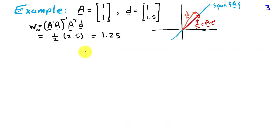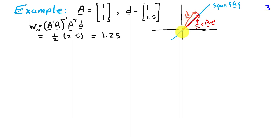We're going to start with an example where p, the number of parameters in w, is 1. So we have a matrix A containing a single column, and d is, for example, [1, 1.5]. If I look for the value of w that minimizes the error between Aw and d, I find that value w₀ is exactly 1.25. In this case we have a two-dimensional space because A has two rows, and the span of the columns of A lies along the 45-degree line. So Aw is always constrained to lie on this blue line, and d is out here at some point not on the line.